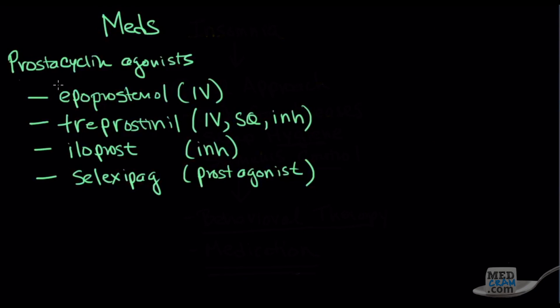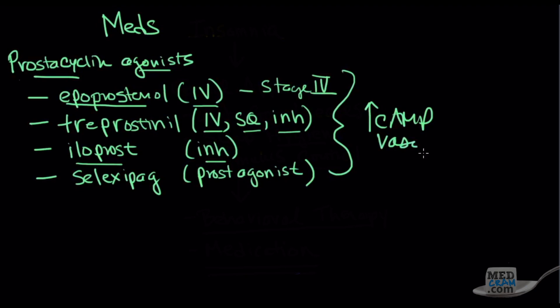The first category is the prostacycline agonists. So this is like epoprostanol IV, which is indicated for stage IV. There's treprostanol, which can come IV, sub-q, or inhaled. There's iloprost, which comes inhaled. And then there's these prostacycline agonists, which are not really prostacyclines, like Selexipag, which all of these things stimulate the prostacycline receptor and in effect cause an increase in cyclic AMP and therefore vasodilation.